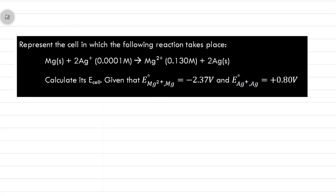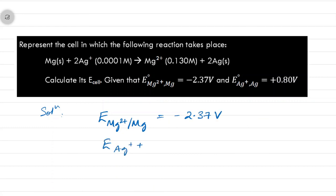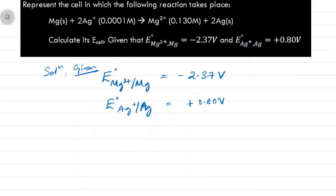In the next problem, we have to represent the cell in which a given reaction takes place. The concentration of silver ions and magnesium ions are given, and we must calculate the cell potential at these concentrations. The reduction potentials of magnesium and silver are also provided, from which we can write the electrode reactions.